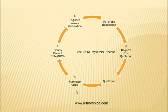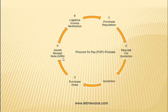Next is Goods Receipt Note or GRN. It is a confirmation that the vendor has dispatched the material mentioned in the PO to the specified plant. The user has to follow transaction code MIGO for GRN. The steps involved are: first, the company sends the PO to the vendor; second, the vendor dispatches material to the plant mentioned in the PO, either full or partial quantity; third, goods are received at the plant; fourth, at the time of GRN, the system generates a document as proof of GR, and accounting documents are also generated accordingly.